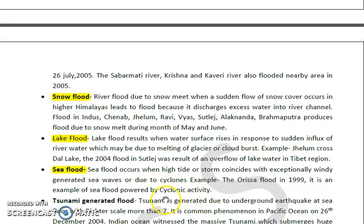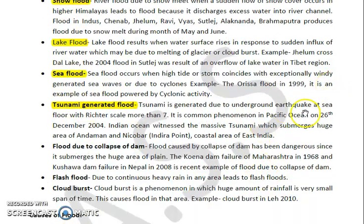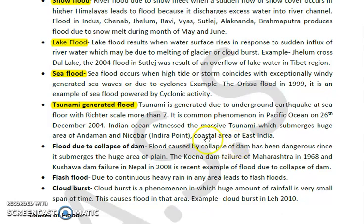Then we have tsunami-generated floods, which we are all familiar with. Tsunamis are generally produced due to underground earthquakes at the sea floor of Richter scale magnitude greater than seven. It is a very common phenomenon in the Pacific Ocean. For example, on 26 December 2004, the Indian Ocean witnessed a massive tsunami which submerged a huge area of Andaman and Nicobar, including Indira Point and coastal areas of east India.